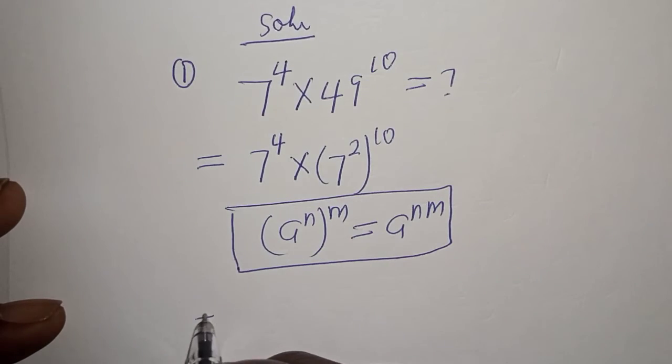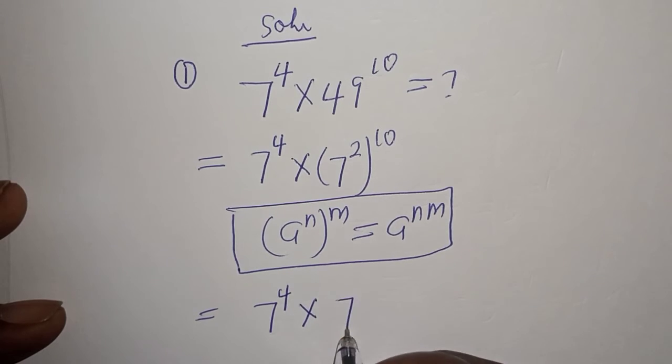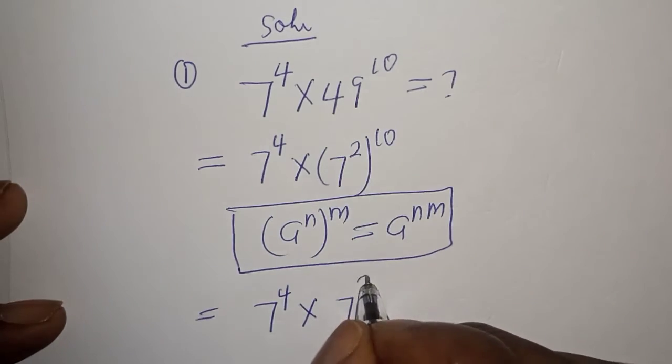So here we have 7 raised to power 4 multiplied by 7 raised to power 10 times 2 that is 20.